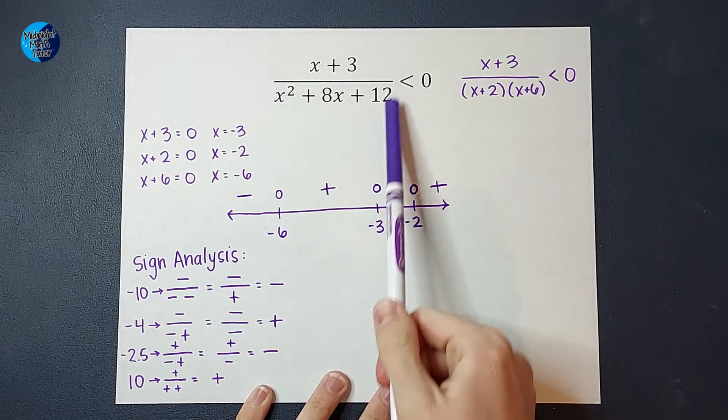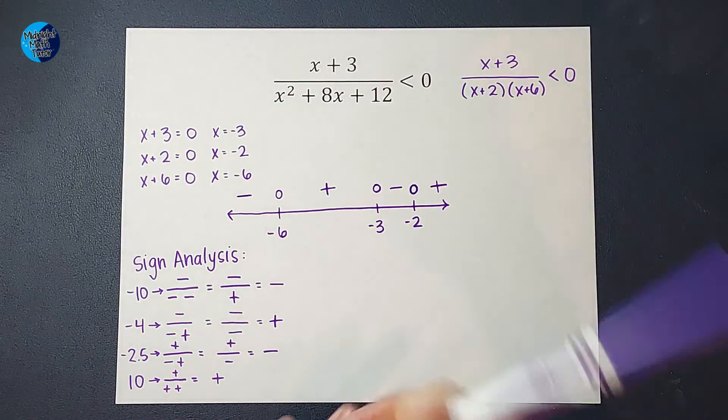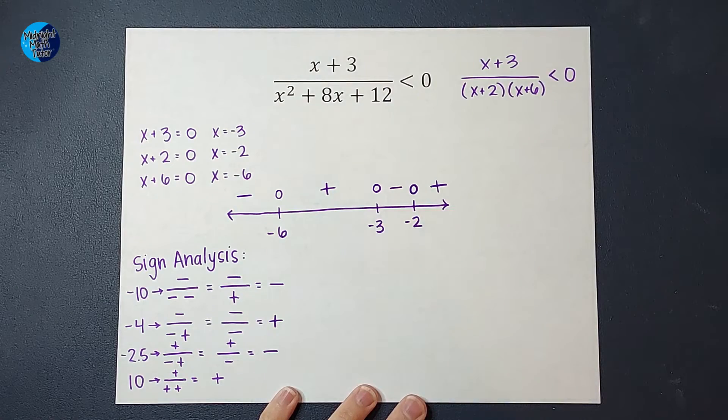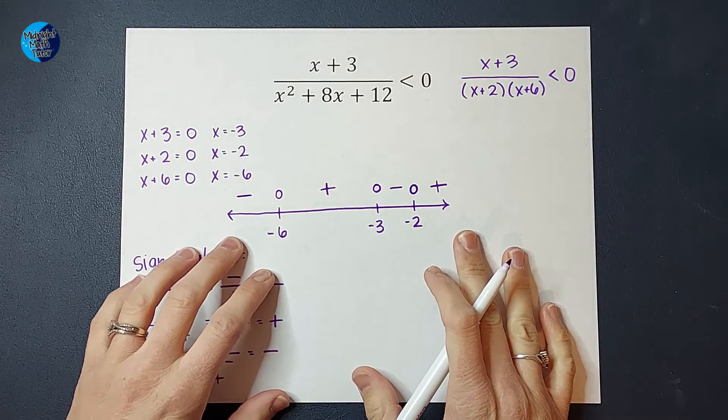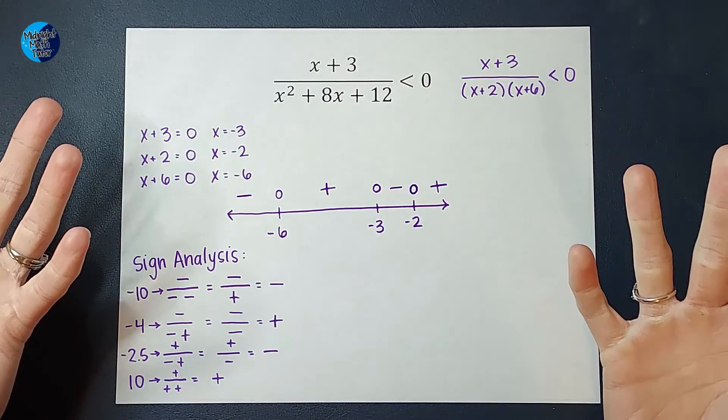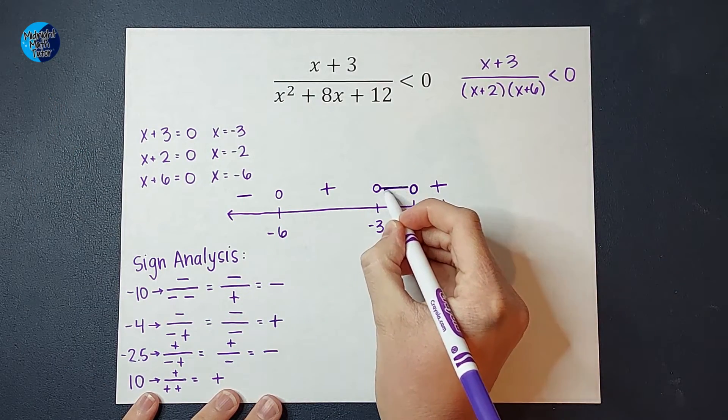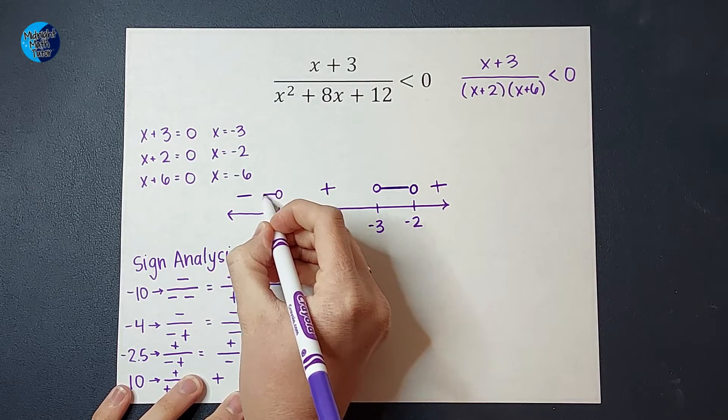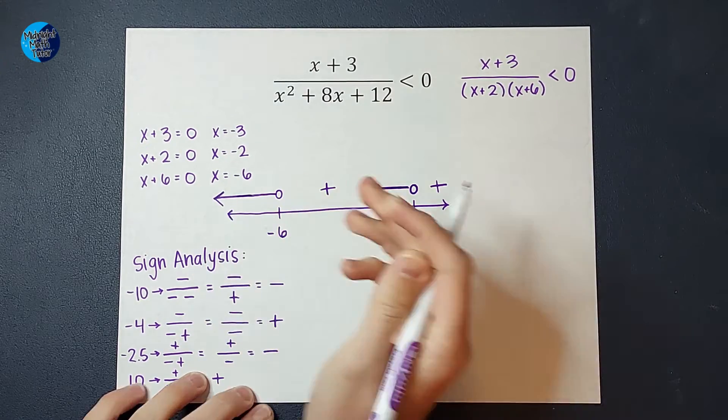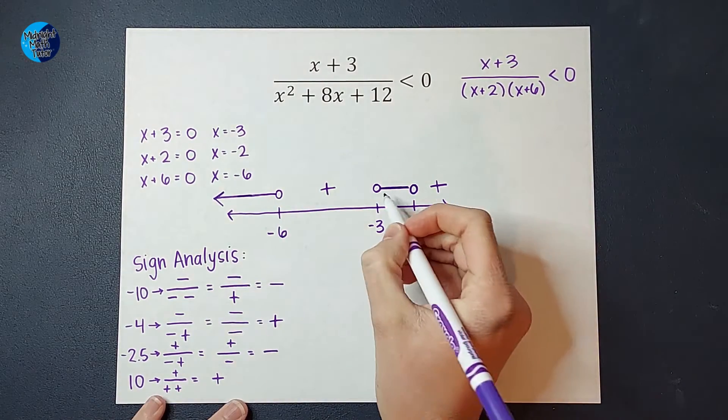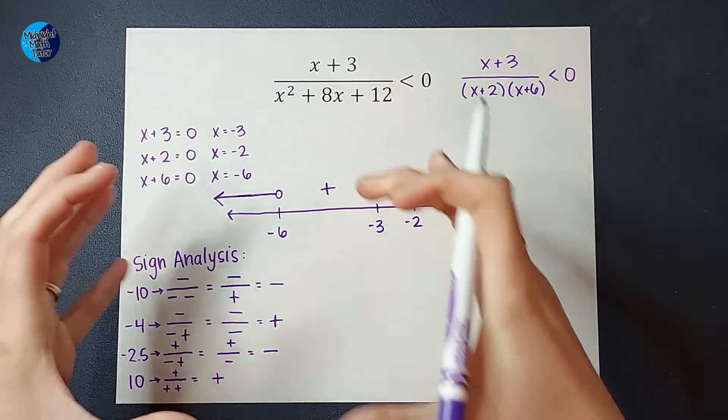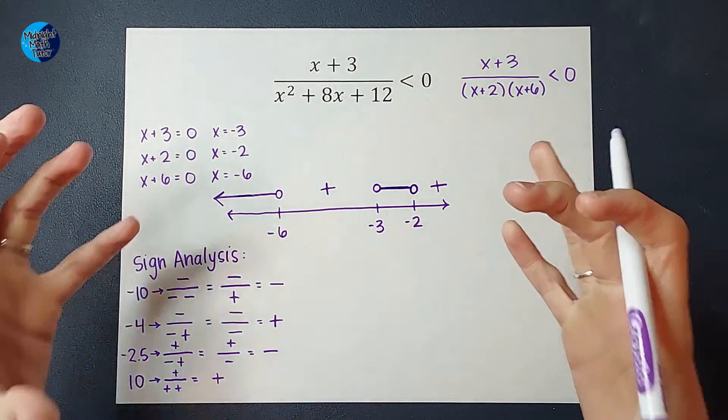But let's go ahead and look back at this, where we are saying that we are wondering where this is less than 0, right? So what is less than 0? Well, negative numbers are less than 0. So that would mean this area and this area where, when I did sign analysis, those regions were what came out negative, okay?